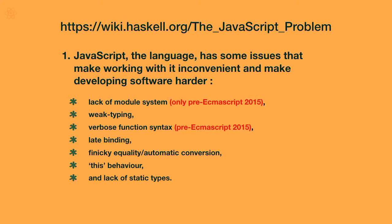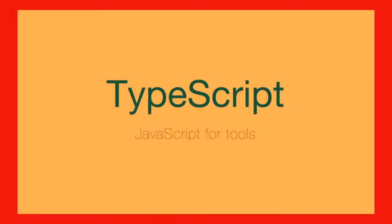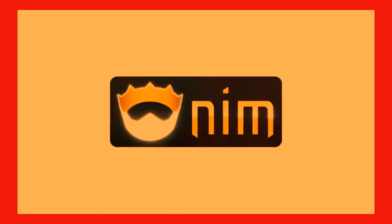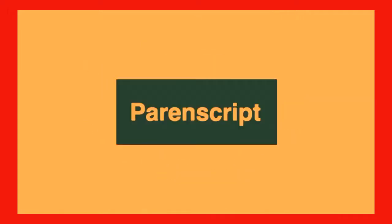For example, item one — a lack of a module system — has been addressed in ECMAScript 2015, also known as ES6. Item three — the verbose function syntax — has also been addressed in ECMAScript 2015 with arrow functions, which are a lot more concise. But we still have weak typing, we still have some strange coercion behaviour, we still have this scoping that's kind of weird. And unfortunately, we still need JavaScript — it's the language of the web.